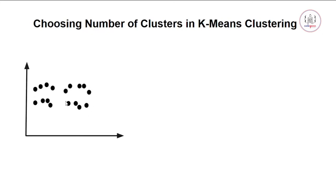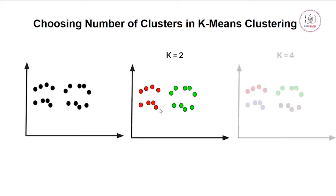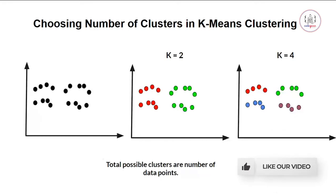Then you might think of these two - these data points that are together and these data points that are together will be the clusters. At k equals 2, we have made these two clusters. Now if I increase this value of k, let's say I make it 4, we have these many possible clusters here. At different values of k, we can form different numbers of groups. So here, the total possible clusters are the number of data points in your dataset.